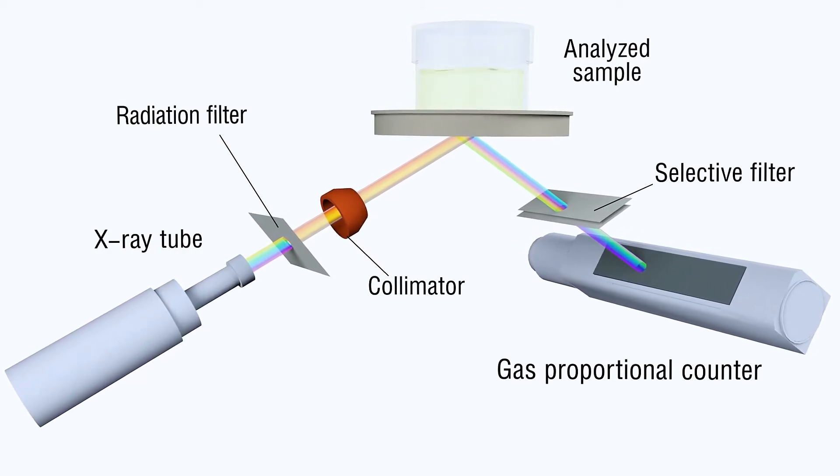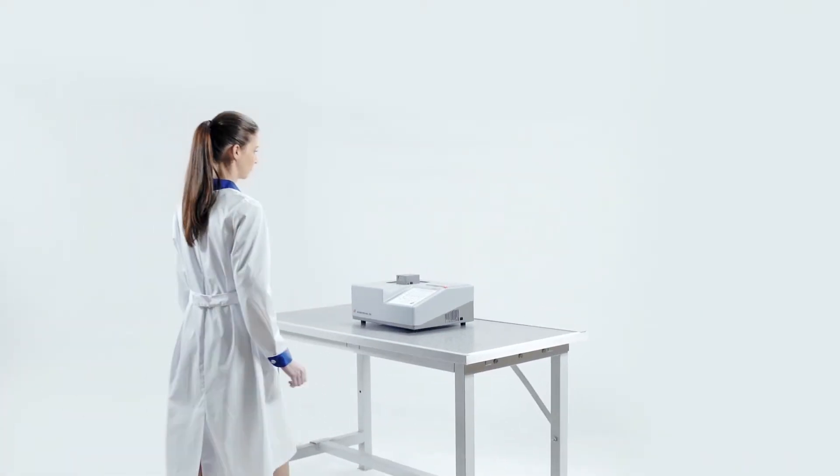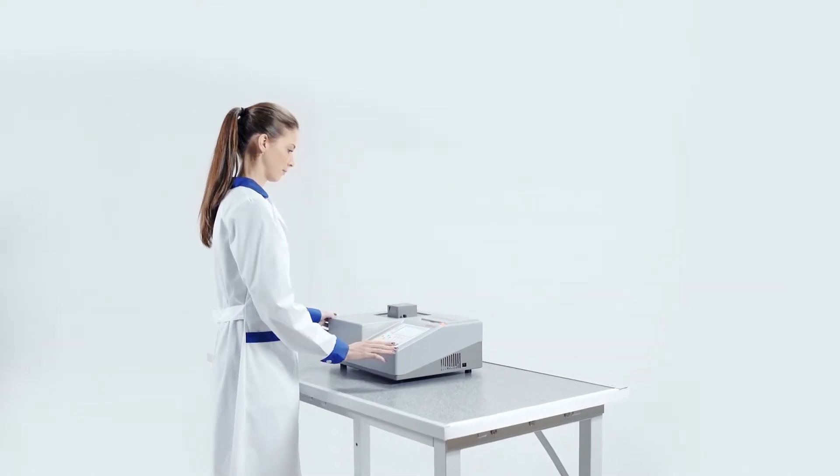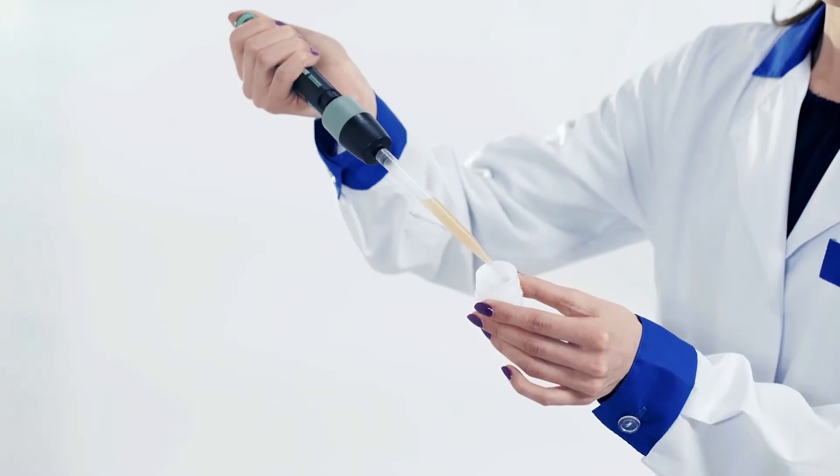Intensity of detected characteristic radiation is proportional to sulfur concentration. The equipment is easy to use and doesn't require special commissioning work. The measurement process is automatic; sample preparation is not required.